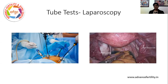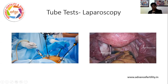The final gold standard test for tubal assessment is called a laparoscopy. In a laparoscopy, we put in a port through the abdomen and we see the uterus, ovaries, and tubes, and the dye coming out. You can see the blue dye here inside the pelvis with our own eyes, and you can see how much more clear it is as compared to these black and white images. Obviously a laparoscopy gives us more information.